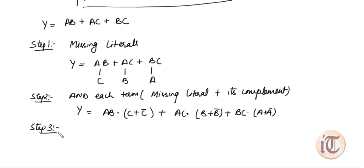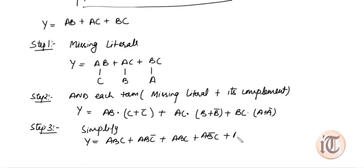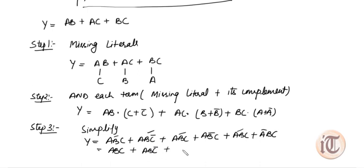Step three: simplify. Opening the brackets gives: ABC + ABC̄ + ABC + AB̄C + ABC + ĀBC. Grouping repeated terms using A + A = A, all the repeated ABC terms reduce to ABC. The resulting standard SOP form contains only terms where all three literals are present.